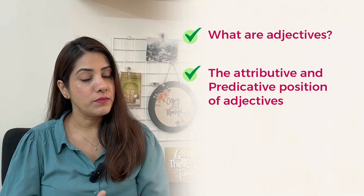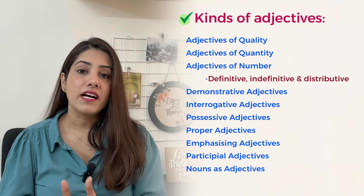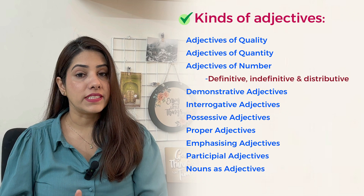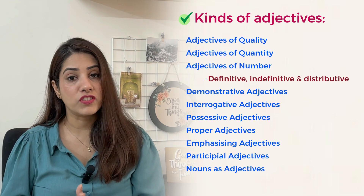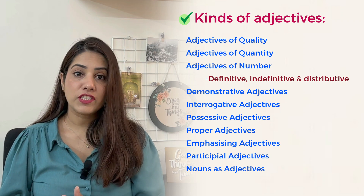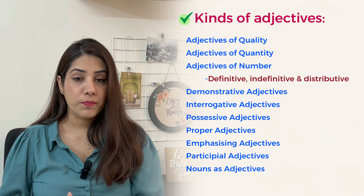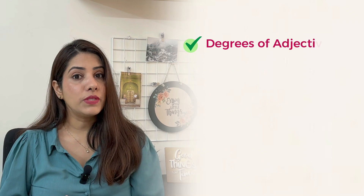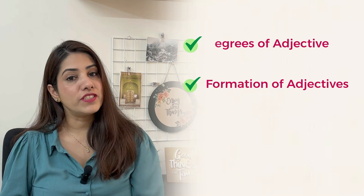In this lesson we are going to learn what are adjectives, the attributive position of adjective, predicative position of adjective, kinds of adjectives, adjectives of quality, quantity, number, definitive, indefinitive, distributive, numeral adjectives, demonstrative adjectives, interrogative adjectives, emphasizing adjectives, proper adjectives, participle adjectives, nouns as adjectives, and in the end we will learn about degrees of comparison and formation of adjectives.